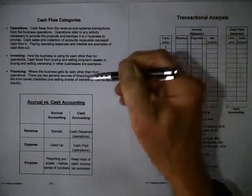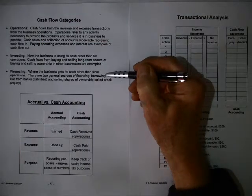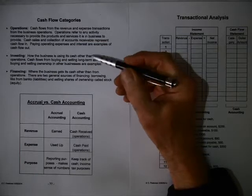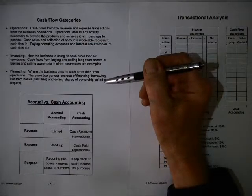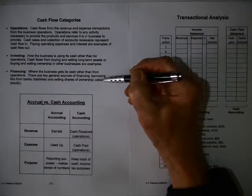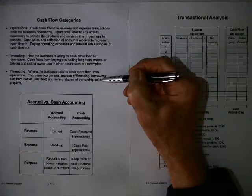Now the next category, let's jump down here to financing. Financing is where the business gets its cash other than from operations. There are two general sources of financing. One borrowing, say from the bank, or selling ownership called stock. Those are the two ways they finance the business.